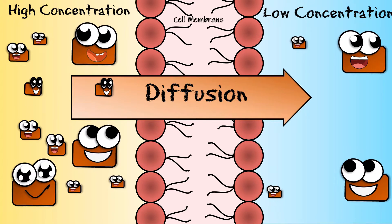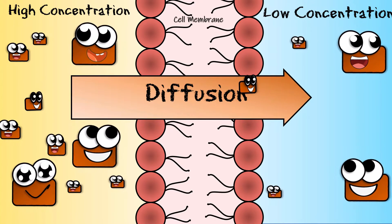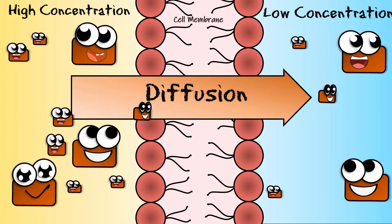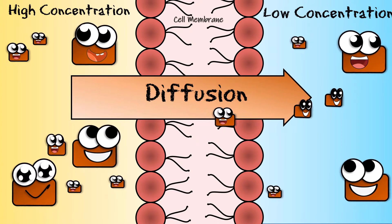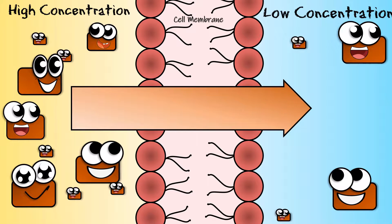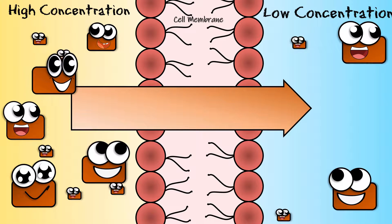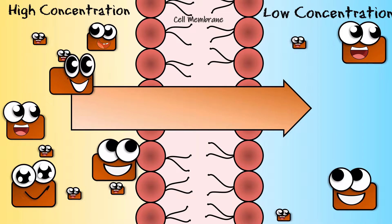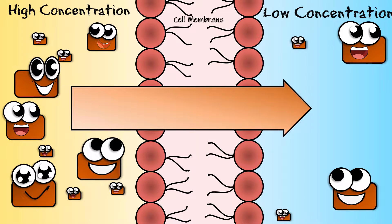Diffusion is used as a transport mechanism in the cell. Small molecules can move from high concentration to low concentration by normal diffusion across the cell membrane. Large molecules cannot diffuse through the membrane easily.